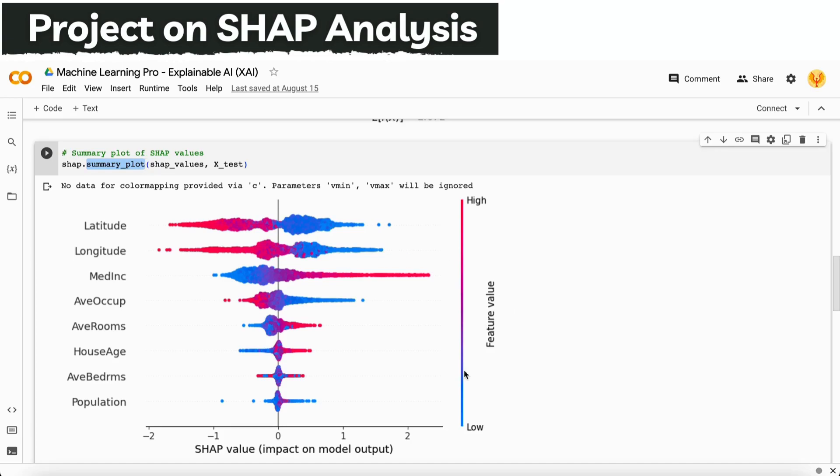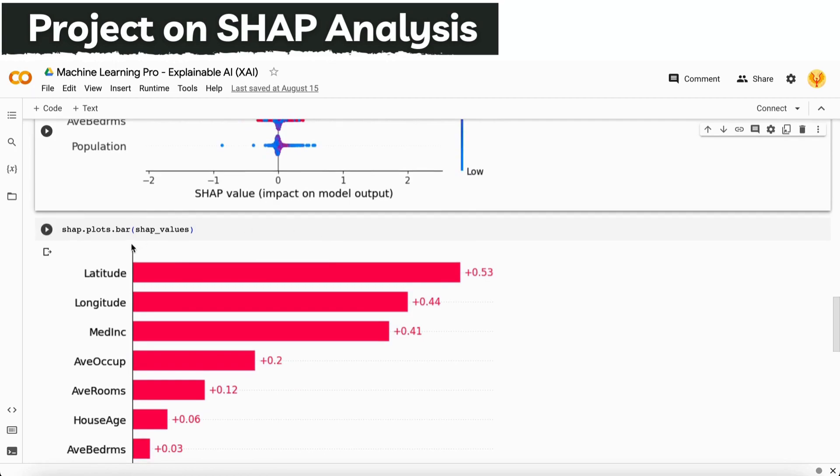The blue and red colors show the feature values, whether those feature values are low like one, two, or three, or high like thousand, ten thousand, or more. In those ways these values will explain the explainability of our model. We can also plot some other values like bar plot.